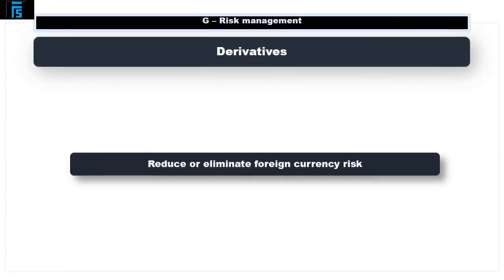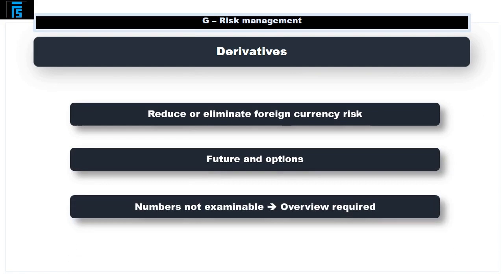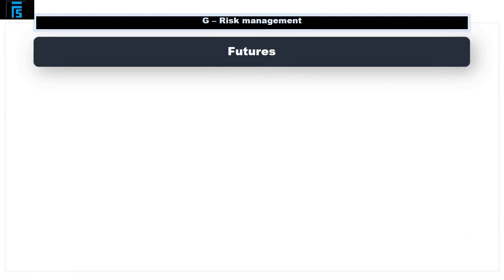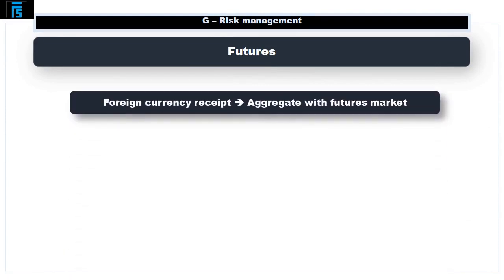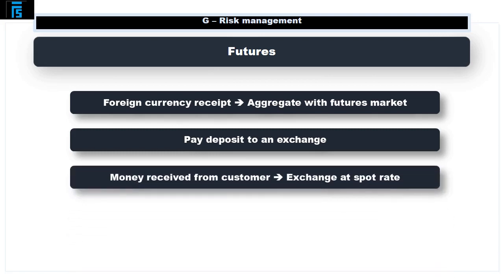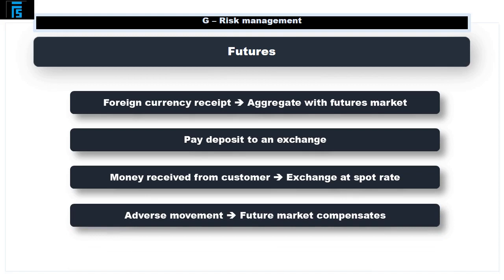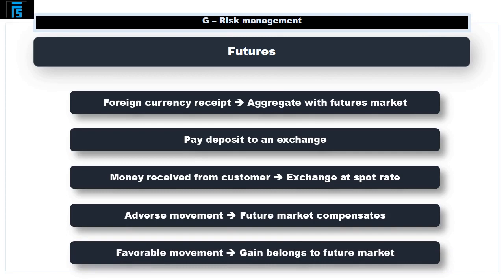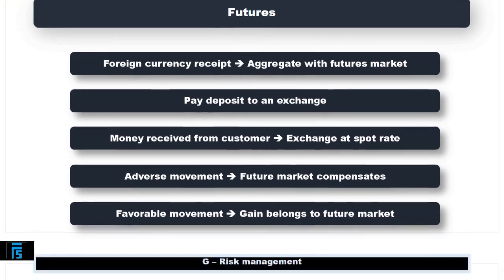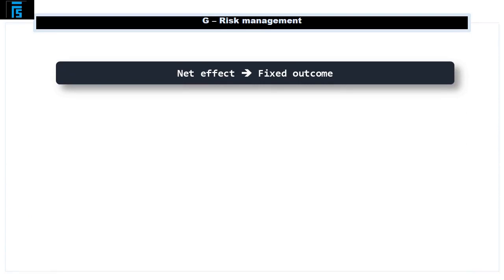Derivatives can be used to help reduce or eliminate foreign currency risk. We'll consider futures and options — note that detailed numbers are not examinable, only an overview is required. With futures, suppose we know we have a foreign currency receipt in the future — we can effectively agree a rate right now with the futures market by paying a deposit to an exchange. When we receive money from our customer we exchange it at the prevailing spot rate; however, the futures market will compensate us if we make a loss due to adverse spot rate movement, and similarly will take away any gain if the rate moves in our favour. In effect, the futures market acts like a counterbalance on a seesaw, giving a fixed net outcome.